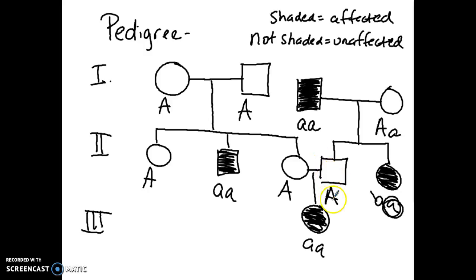We look at this son. He has a dominant A. Where did he get it from? He had to get that from mom because dad doesn't have a dominant A. So every time this father has a child, he must pass down a recessive a. So he must be heterozygous.